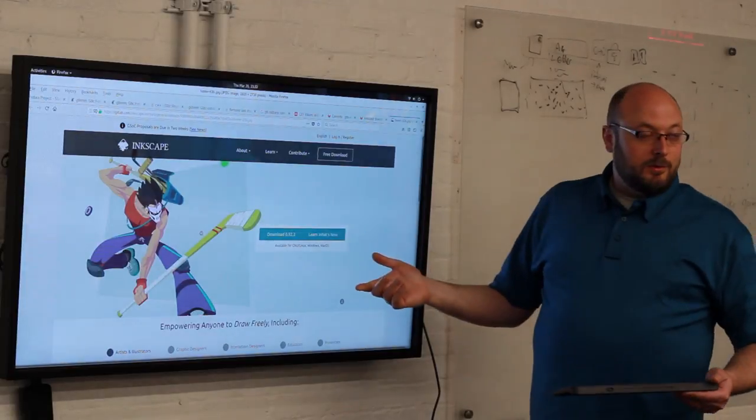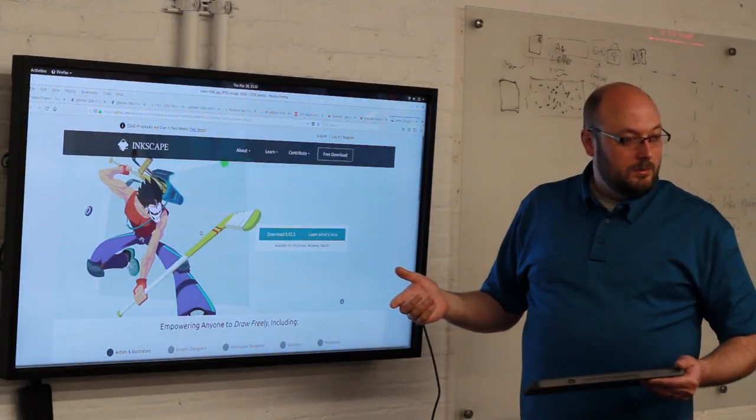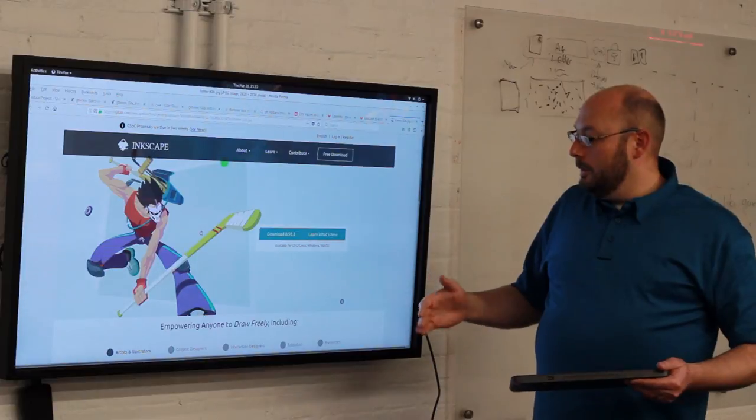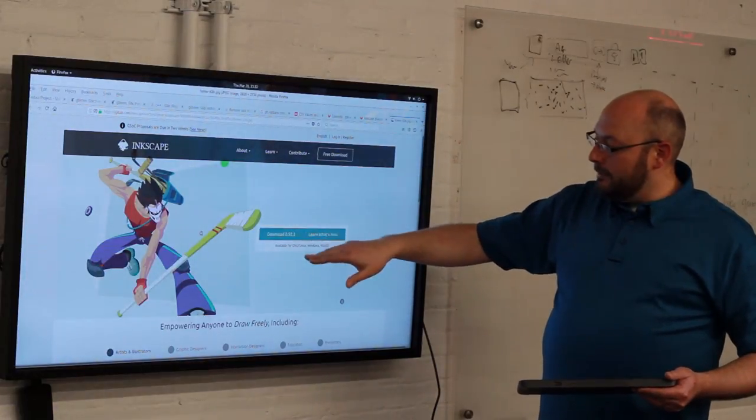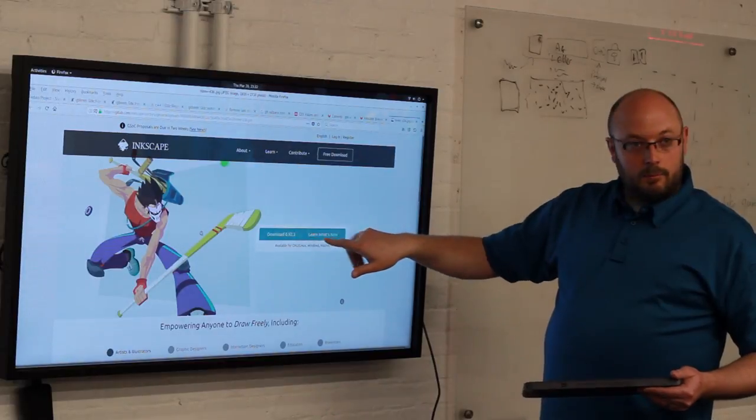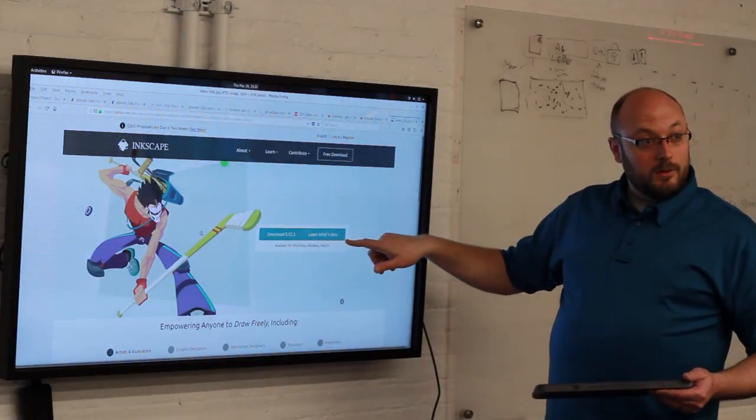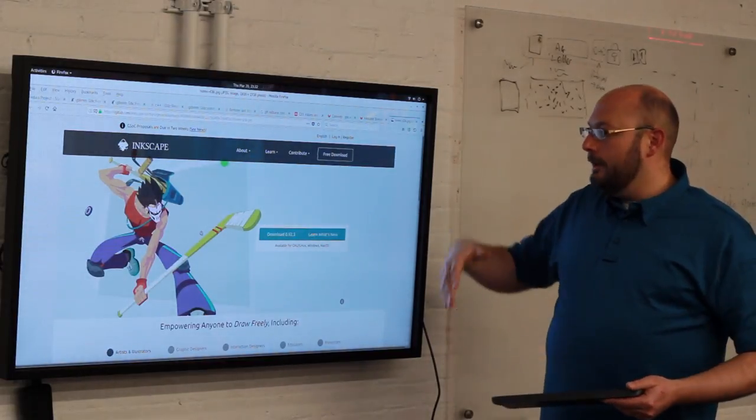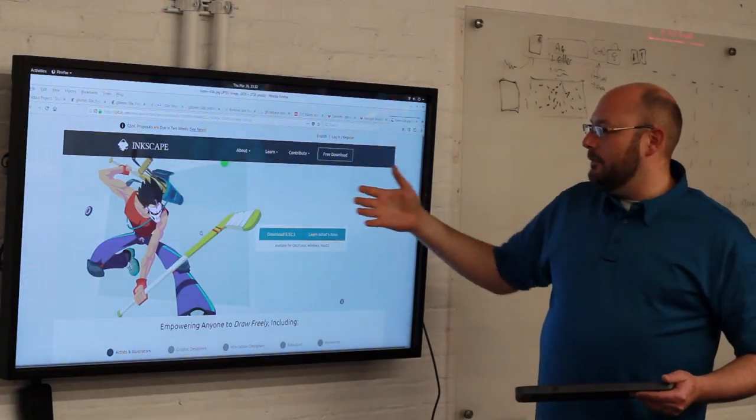The main reason people show up on the site is to download. It's by and large what people do. And so we want to make that really easy to find, download the latest version. Plus, this is a combined button where you can read the release notes. Every time you visit the site, this will kind of randomly pull up something new.